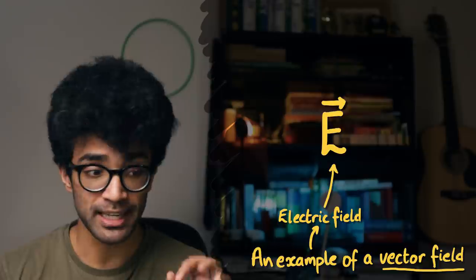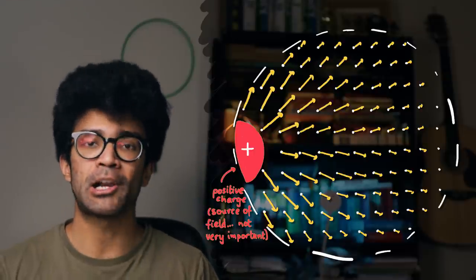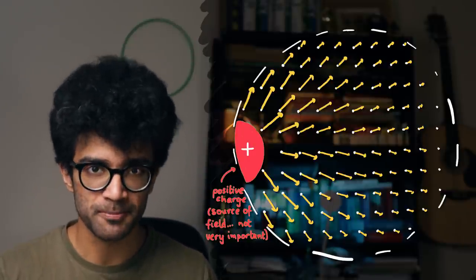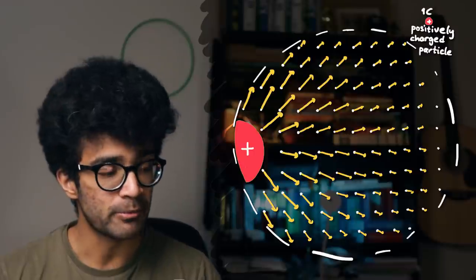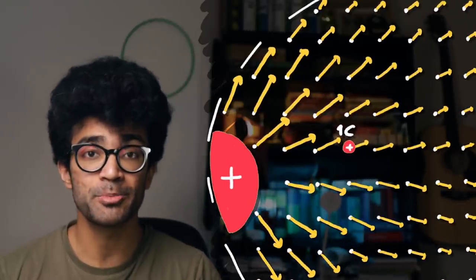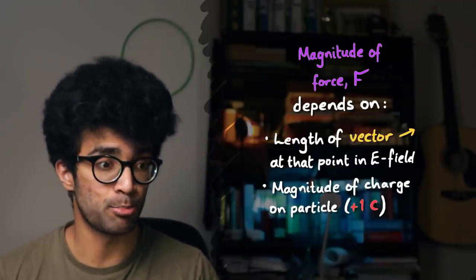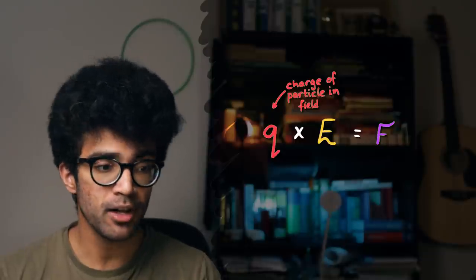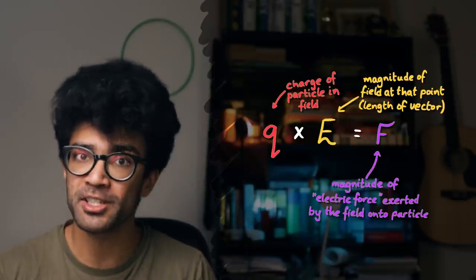Now let's look at electric fields — a particular example of a vector field. This field represents something very closely related to the force exerted on a charged particle placed at any point in that field. If we take a positively charged particle with a charge of one coulomb and place it at a particular point, this diagram tells us the direction and magnitude of the force it will experience.